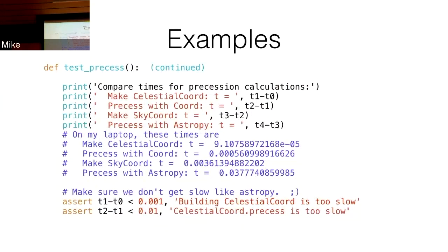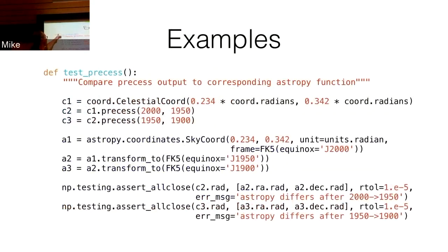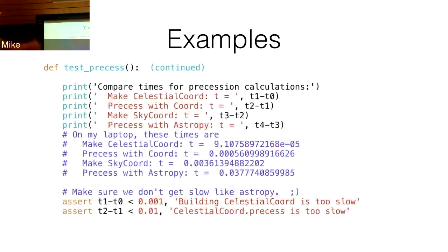There's also a somewhat cheeky but not too bad test: we check that our timing of these calculations is still efficient. We time t0 through t4 — how long does it take to create the object, to do the precession — and print those out. Cord is way, way faster than AstroPy, which is the main advantage of using Cord. We assert that our times are still efficient so nobody goes in and adds code later that blows up the running time. We don't want to get slow like AstroPy.